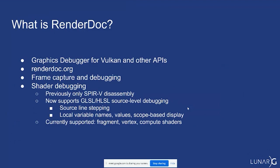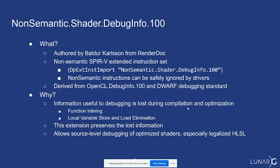Baldur Karlsson added source-level debugging to RenderDoc, which gives you a much nicer source line stepping ability — the ability to look at local variables using the actual user names and see the values. Currently this capability is supported for fragment shaders, vertex shaders, and compute shaders.